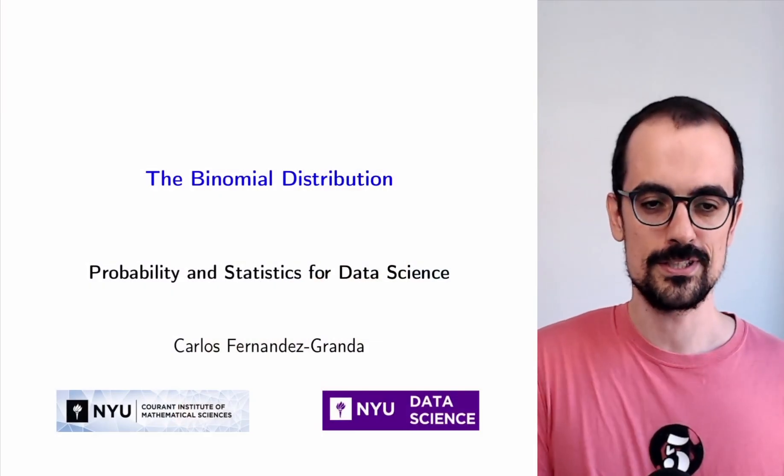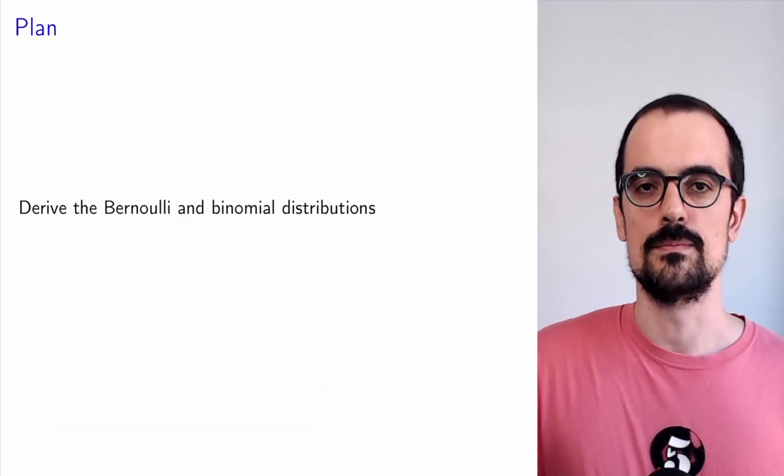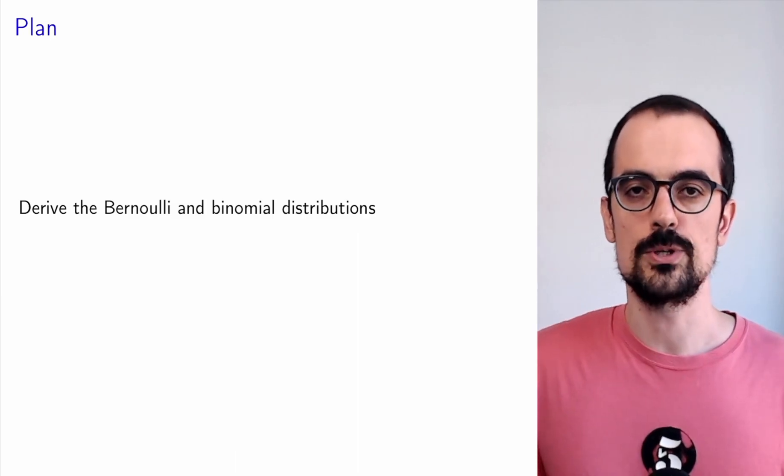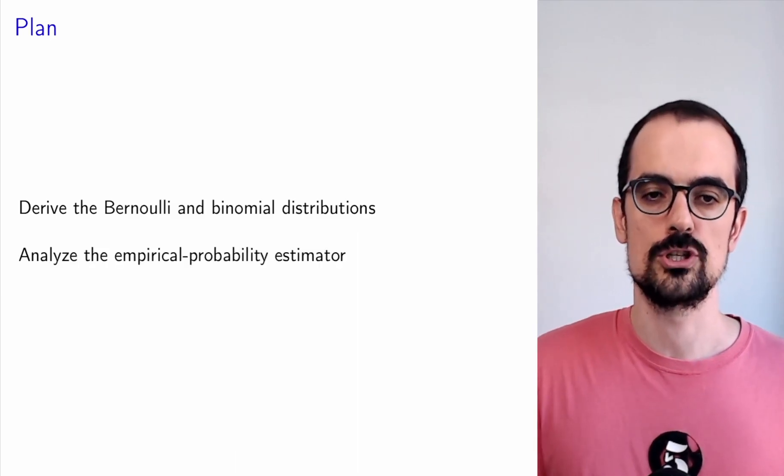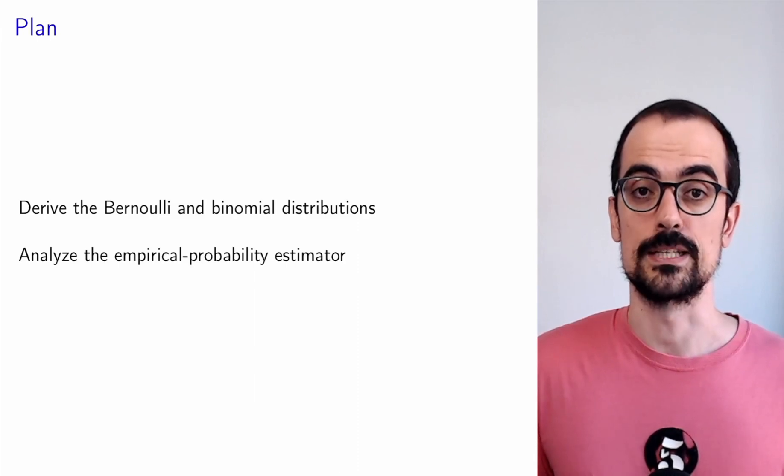Hello everyone. Welcome to Probability and Statistics for Data Science. Today we're going to talk about the Bernoulli and the binomial distribution, and we're going to use the binomial distribution to analyze the empirical probability estimator. This is the first time that we're going to use a tool from probability theory to study a statistical technique. Let's get to it.